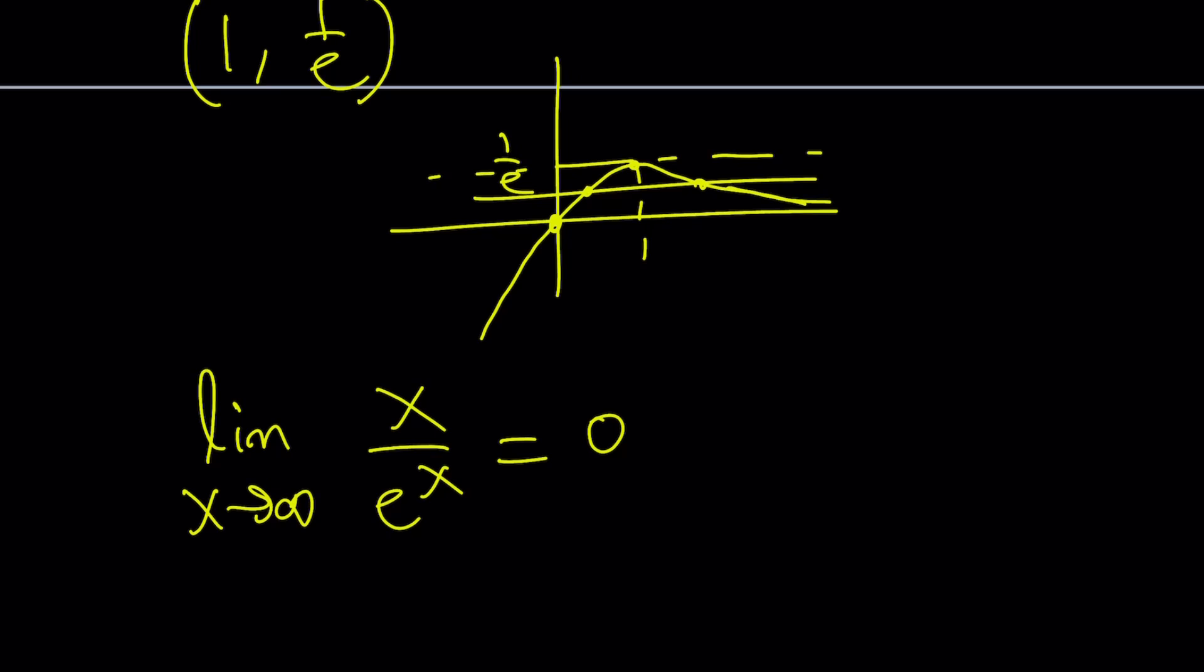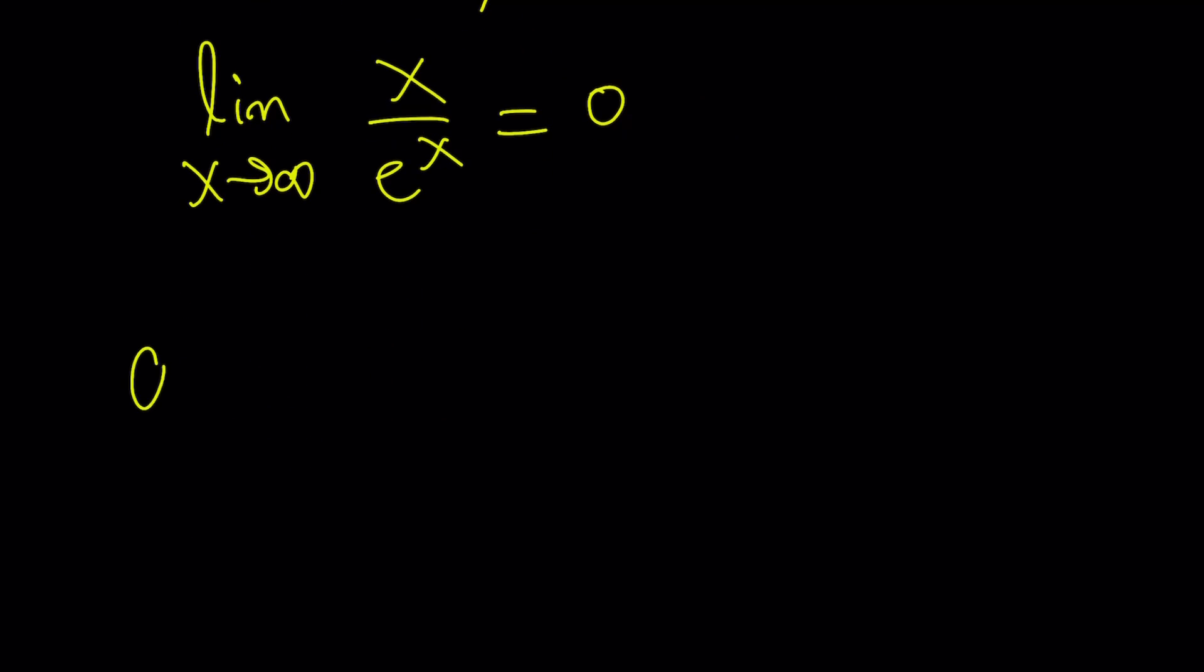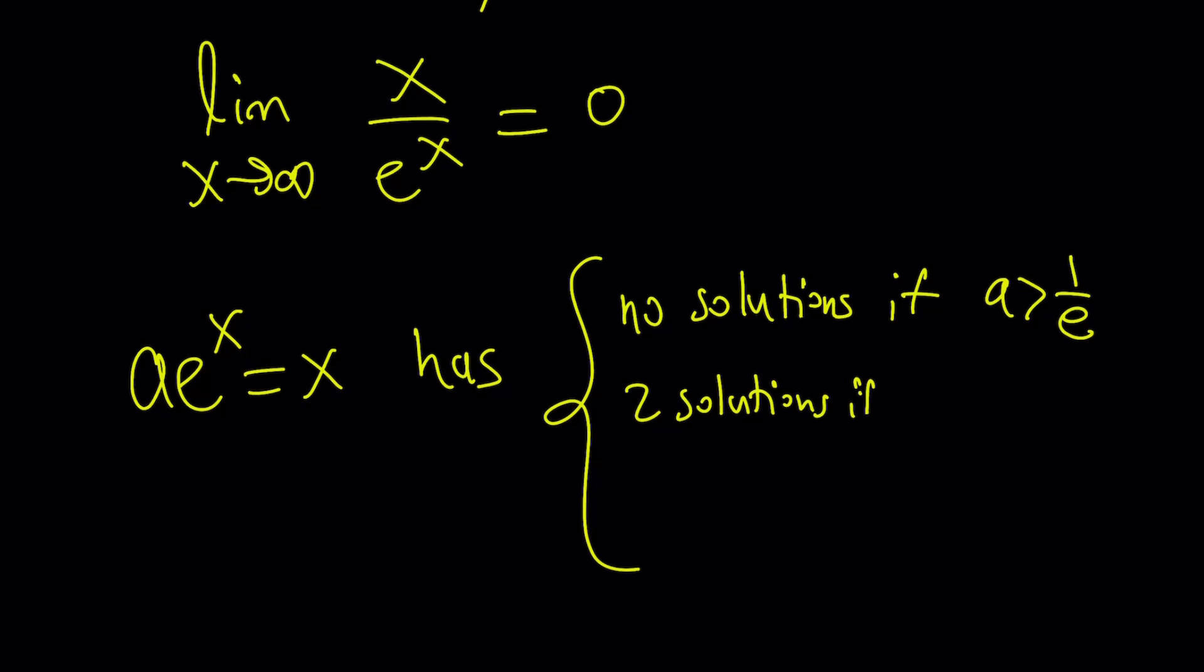So let's go ahead and put it all together. Our function or equation a e to the x equals x has no solutions if a is greater than 1 over e. It's going to have two solutions if a is between 0 and 1 over e. Remember, that's where we intersect at two points, but not 0. And one solution if a is less than or equal to 0 or a is equal to 1 over e. That's the case that we didn't include. And remember, that is the point of tangency.